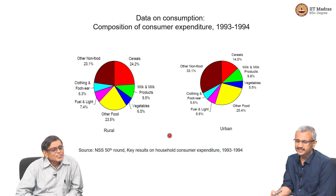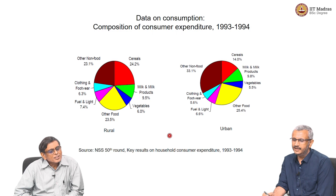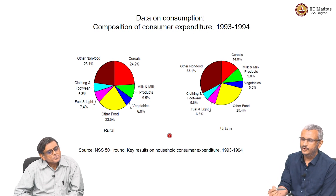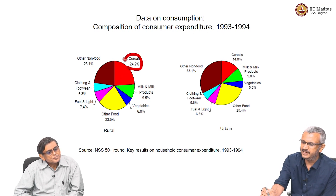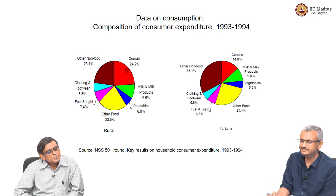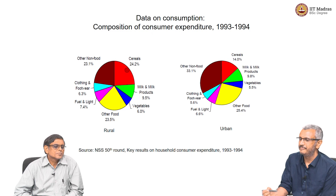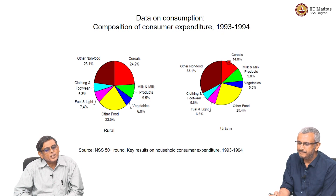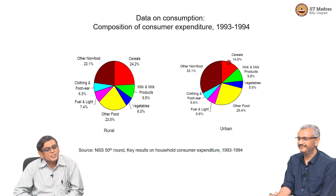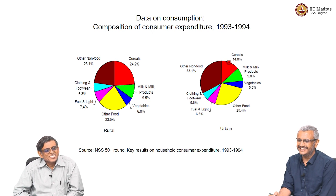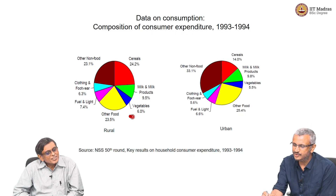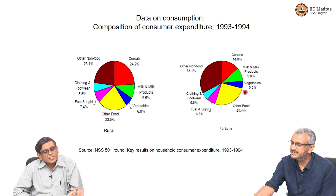So what is the 1993-94 data saying? We find that cereals dominate: 24.2 percent of rural consumption expenditure is for cereals, while urban is only 14 percent. There is also one anomaly I want to highlight — look at vegetables in rural, 6 percent, but in urban it is only 5.5 percent. We would have thought the other way around, that the urban person might be having more vegetables.